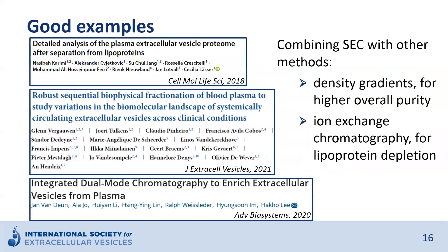As mentioned at the beginning, SEC is a purely size-based method, but there are also other principles such as density, charge, and immunophenotype, which can be exploited to separate out EVs. Combining several principles typically results in a higher relative enrichment of EVs versus contaminants. Indeed, a number of groups have successfully combined SEC with other methods, such as density gradient or other types of chromatography such as ion exchange, in order to obtain an EV sample of higher purity.